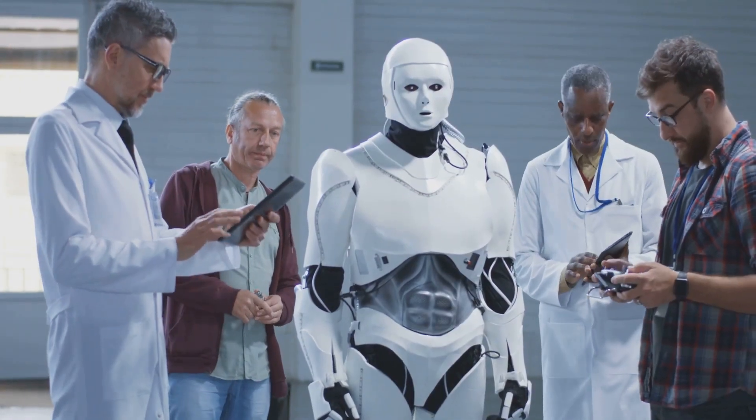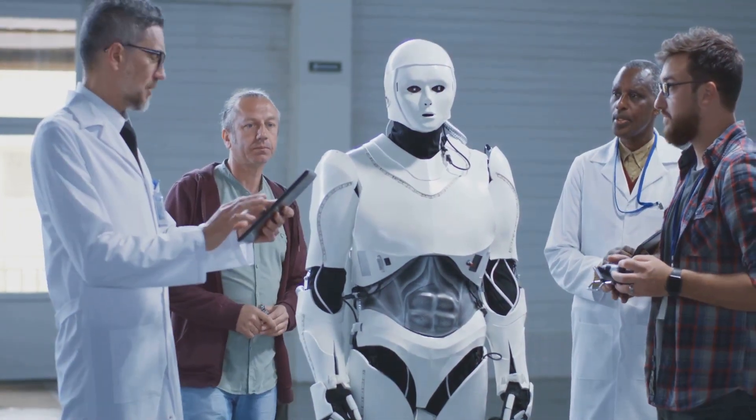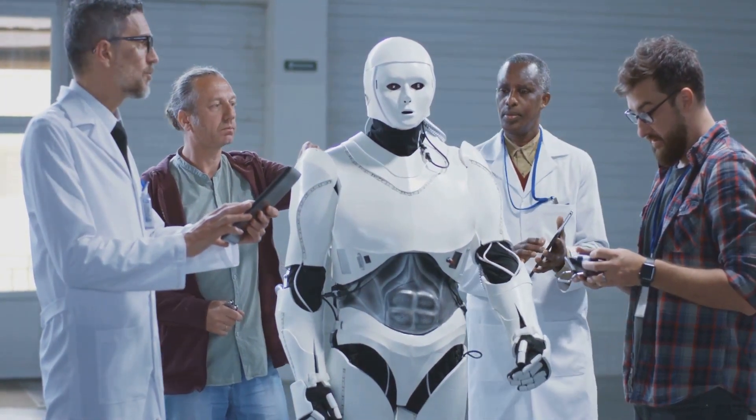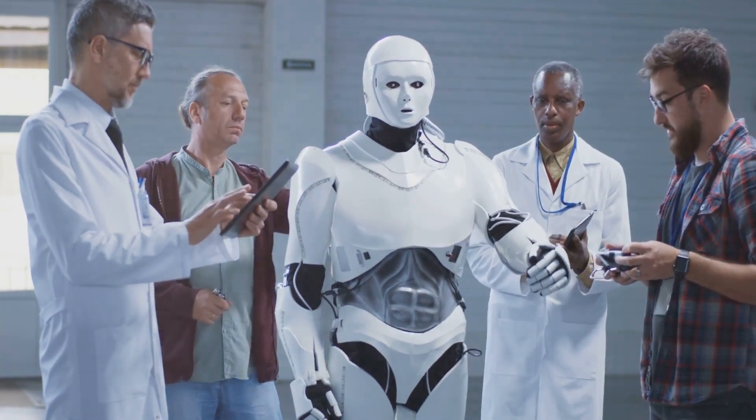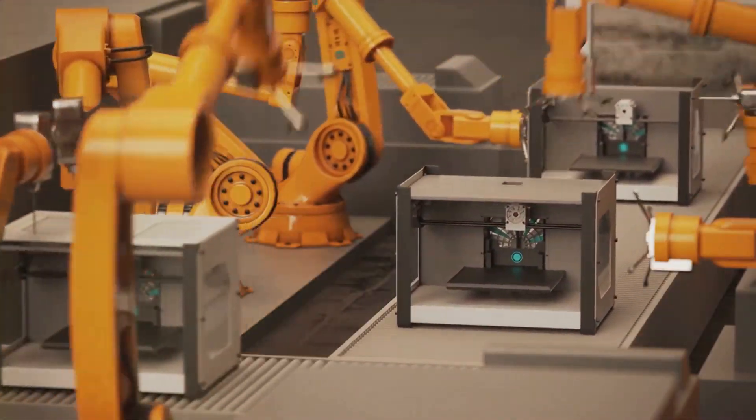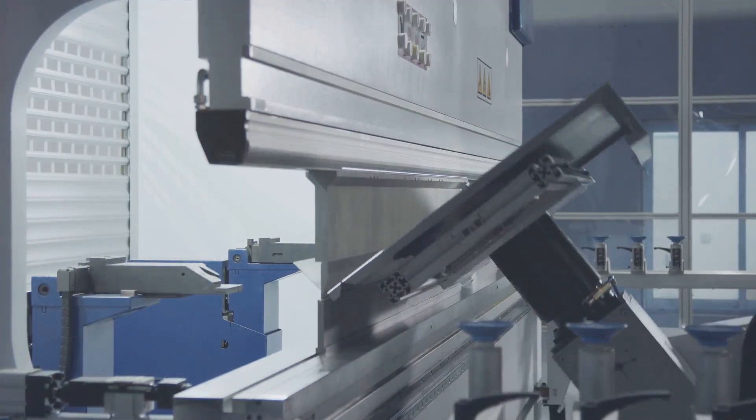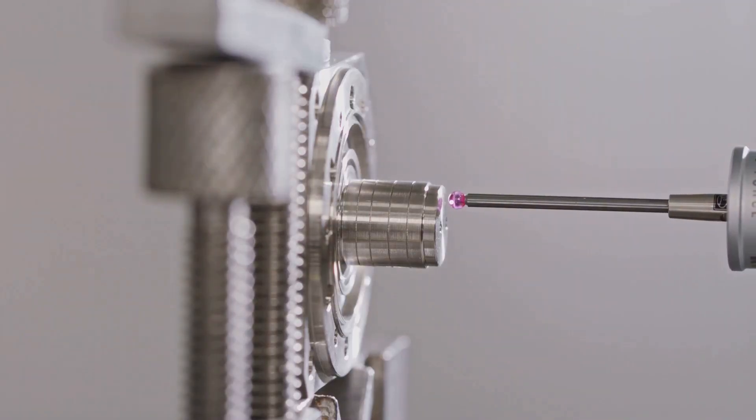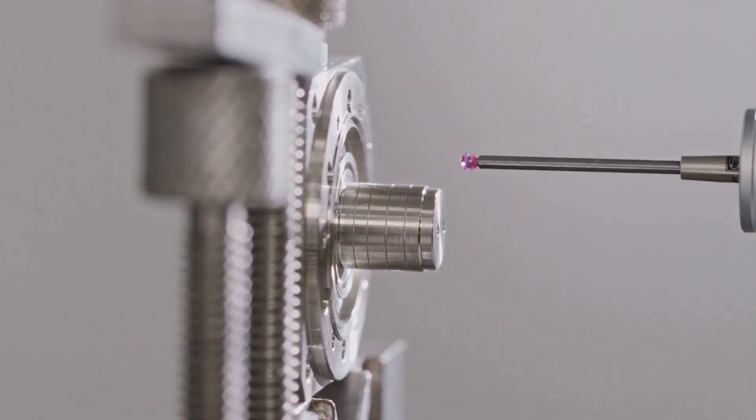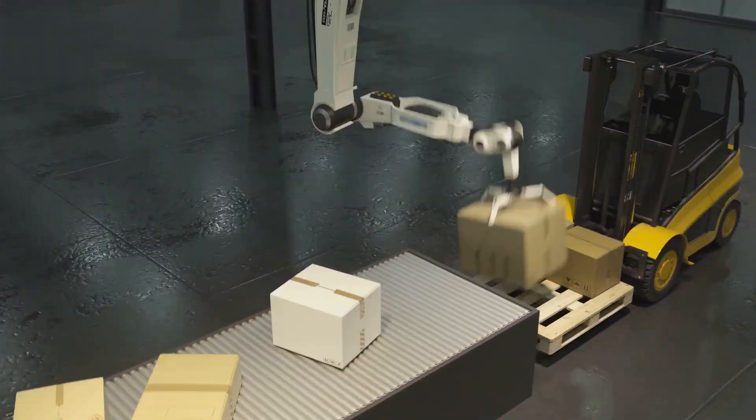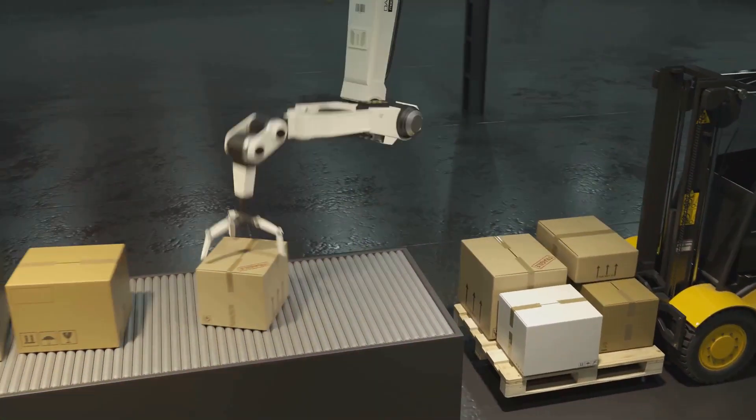Engineers program these robots with advanced algorithms, ensuring they can perform complex tasks. On the factory floor, robots in various stages of assembly showcase the intricate process of their creation. Each robot undergoes rigorous testing to ensure it meets the highest standards of quality and performance. Finally, the robots are packaged and prepared for shipment, ready to be deployed around the world.